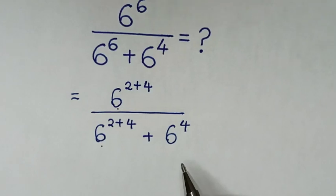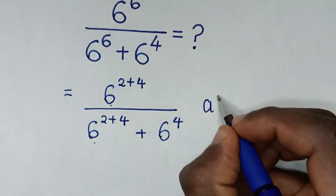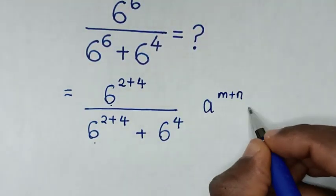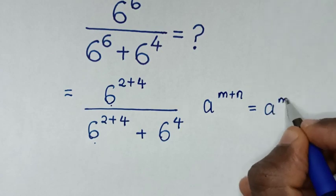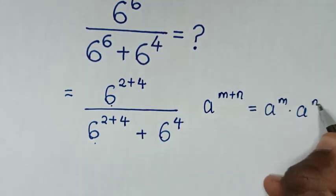In the next step, from here and here, we'll apply the exponential rule that a power m plus n is equal to a power m times a power n.